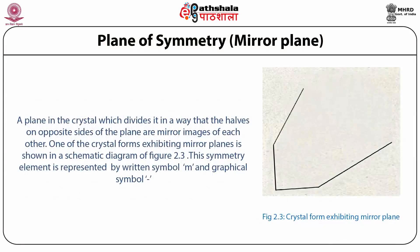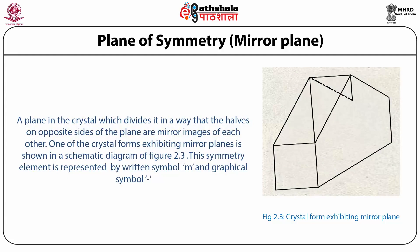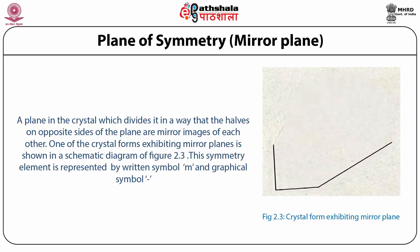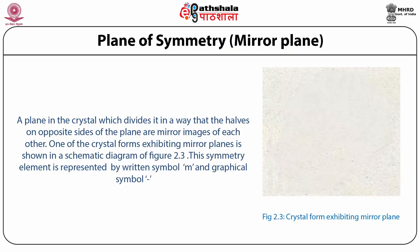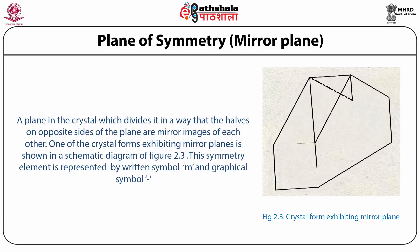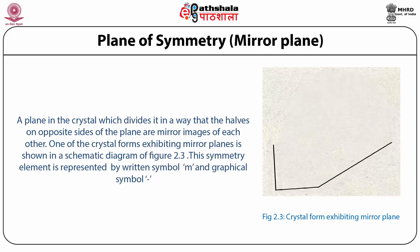A plane in the crystal which divides it in a way that the halves on opposite sides of the plane are mirror images of each other. One of the crystal forms exhibiting mirror planes is shown in the schematic diagram of figure 2.3. This symmetry element is represented by the written symbol M and a graphical symbol in the form of a dash. Figure 2.3 shows crystal forms exhibiting mirror planes.